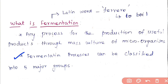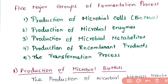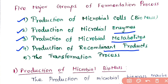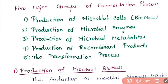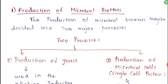Fermentation process can be classified into five major groups: first, production of microbial cells (microbial biomass); second, production of microbial enzymes; third, production of microbial metabolites; fourth, production of recombinant products using microbial culture; and fifth, the transformation process, where a compound is changed using a biocatalyst.